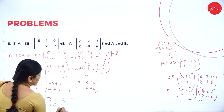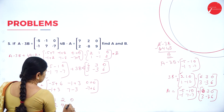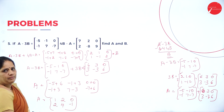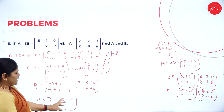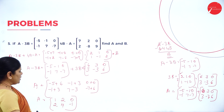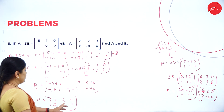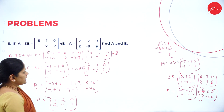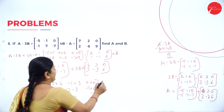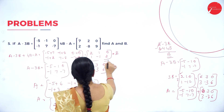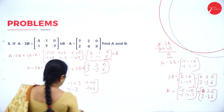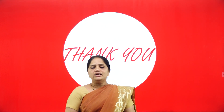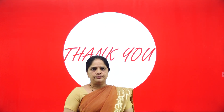So A equals [1, 2, 0; 2, 4, -1]. We have found both matrix A and matrix B. We come to the end of this session. Thank you.